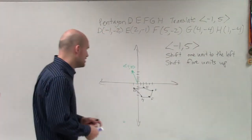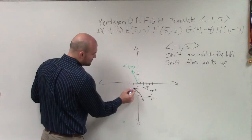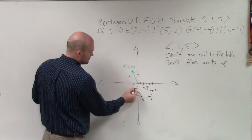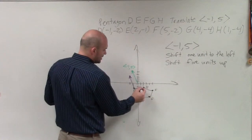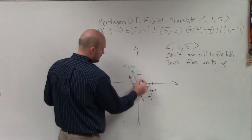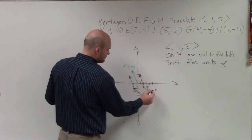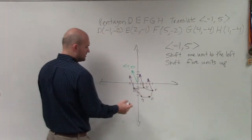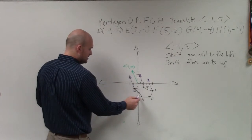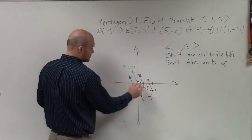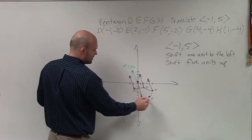So now I'm going to apply the transformation vector to each one of my points. All it's telling you to go is left 1 up 5 — applying that shift to every point of the pentagon.